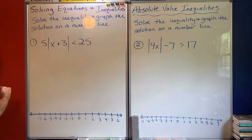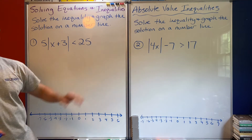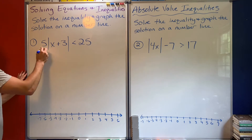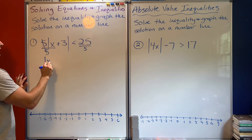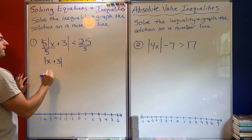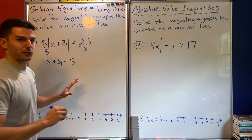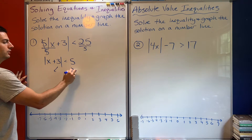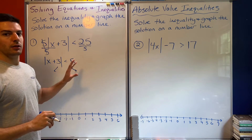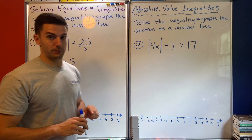For number one, I've got five times the absolute value of x plus 3 is less than 25. You have to divide by that 5, so now I'm left with absolute value of x plus 3 is less than 5. I'm going to stop right there — the next step is to split it, but this is the new stuff I haven't covered yet.